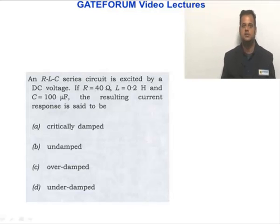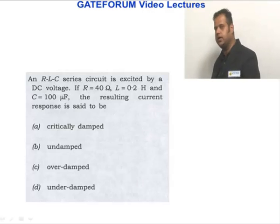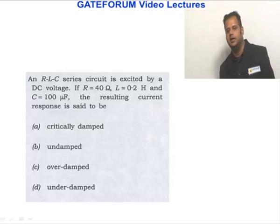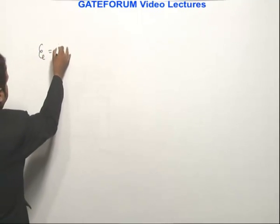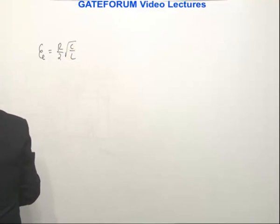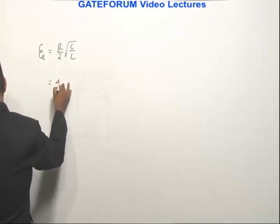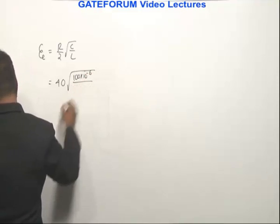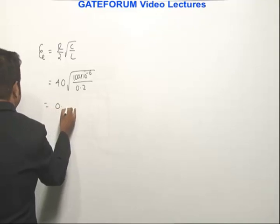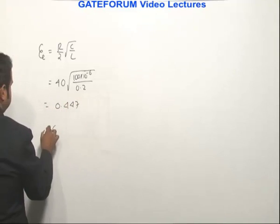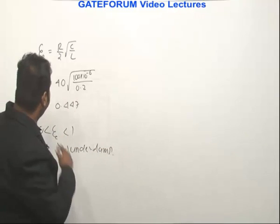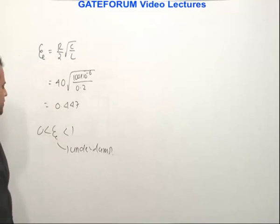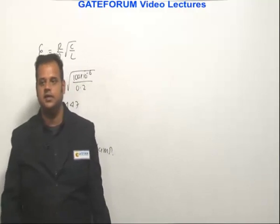An RLC series circuit is excited by a DC voltage with R = 40 Ω, L = 0.2 H, and C = 100 μF. The resulting current response is which of the following: critically damped, underdamped, or overdamped? For a series RLC circuit, ζ = (R/2) × √(C/L). Substituting: ζ = (40/2) × √(100×10⁻⁶ / 0.2) = 0.447. Since 0 < ζ < 1, this is an underdamped response. Option D is the right answer.